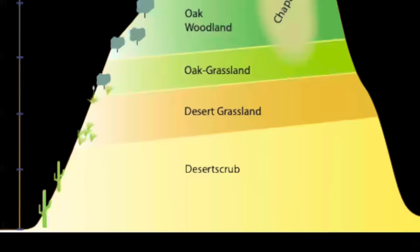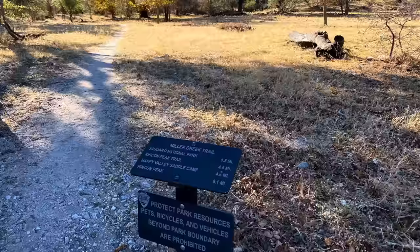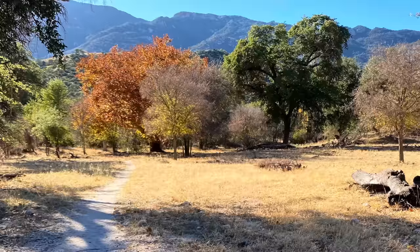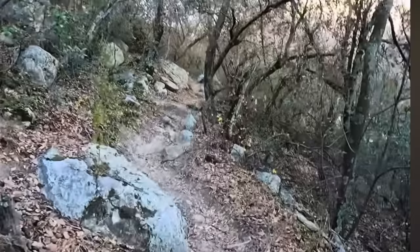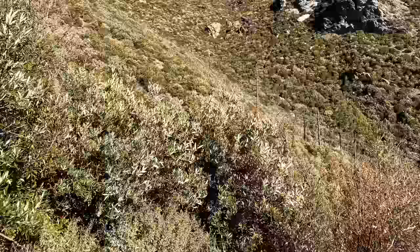Next up we have the oak grasslands, which are between three to four thousand feet elevation. This is where you're going to find Arizona white oak, Emery oak, and Arizona juniper. Next we have the oak woodlands between four and five thousand feet, where you'll find every other oak mentioned earlier along with Madrean oak. Then there's the chaparral biome, where you're going to find pinyon pines, scrub oak, agave, juniper, and manzanita.